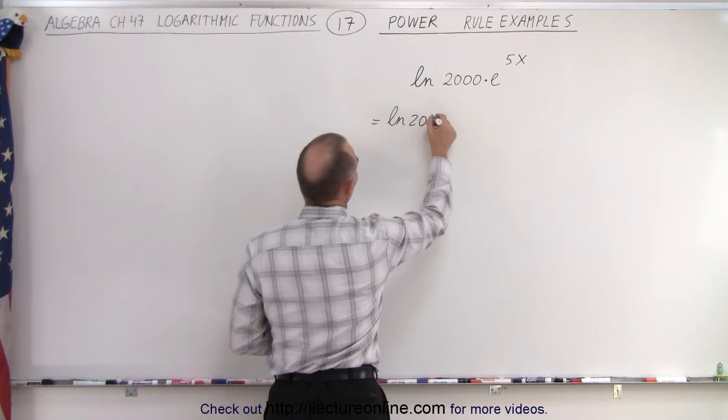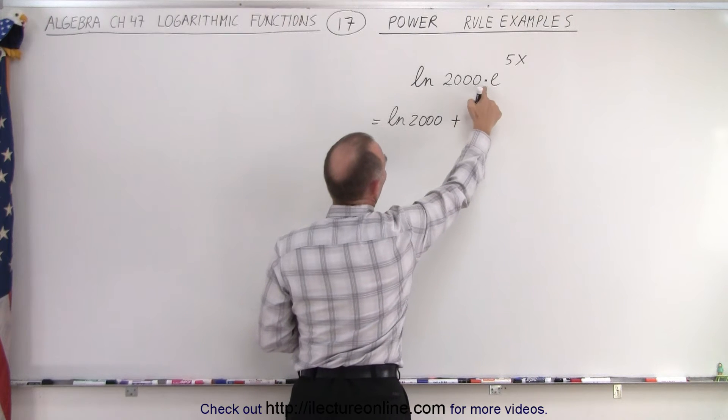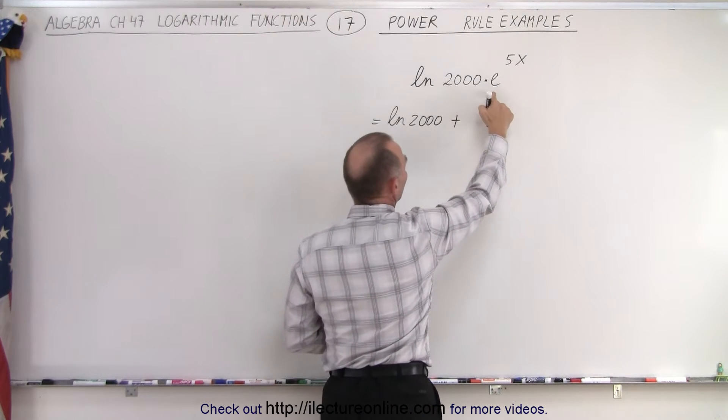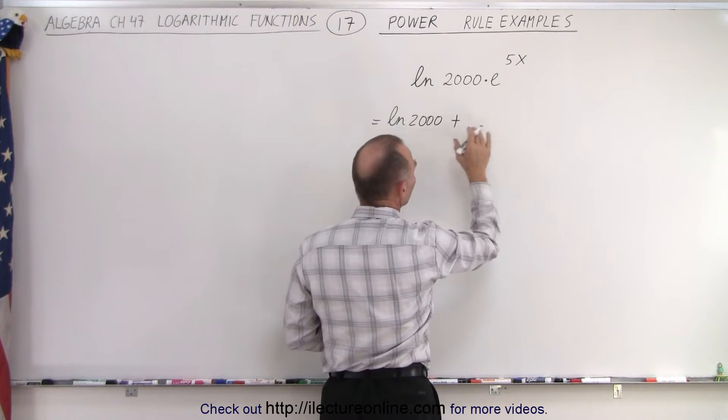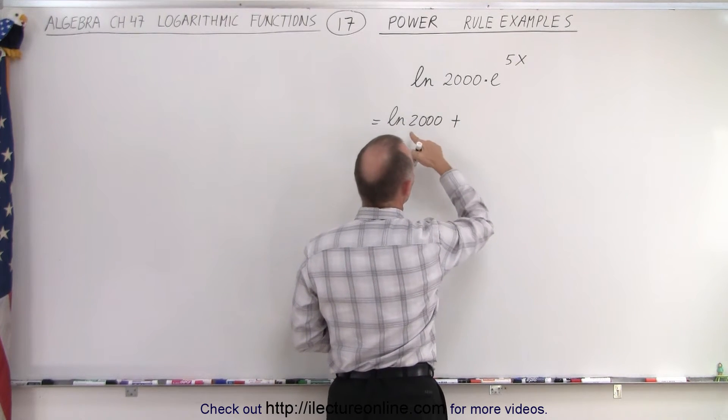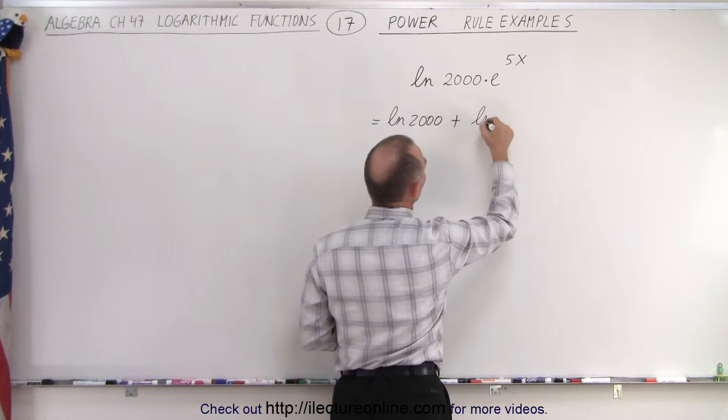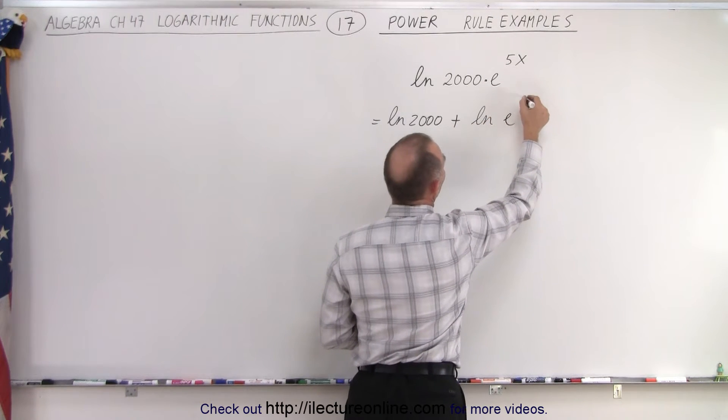the natural log of 2,000 plus, because the power rule says that if you take the natural log or the log of a product, you take the log of the individual components and add them together. So the natural log of 2,000 plus the natural log of e to the 5x.